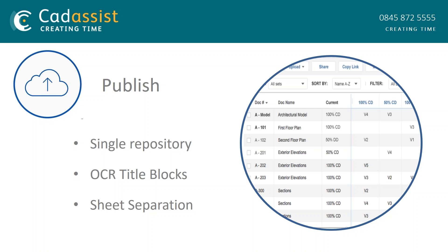Publishing documents is made easier by automating common and repeatable tasks. It can extract sheets from Revit models and uses OCR — optical character recognition — of title blocks to automate the naming process. There is also a logical, construction-specific organization in a single repository.